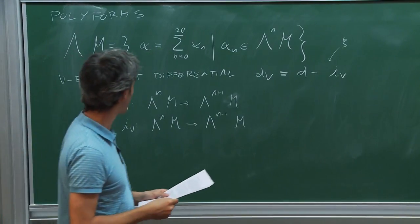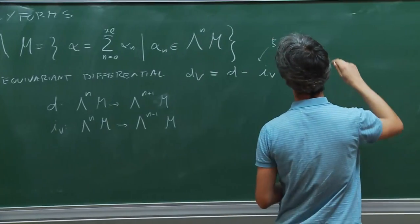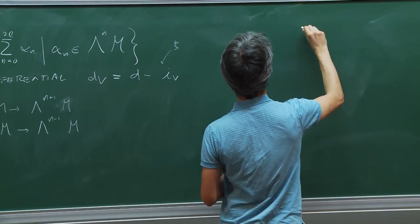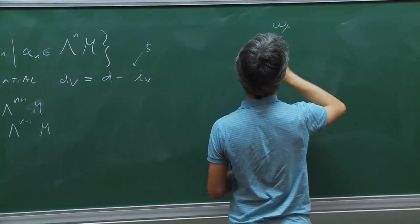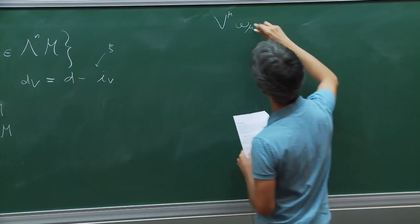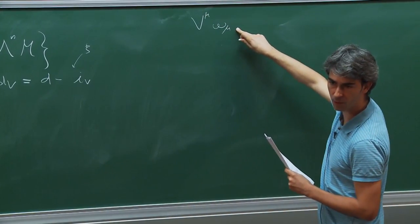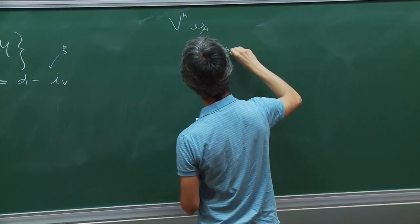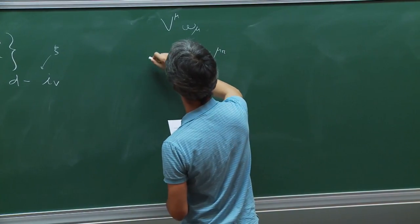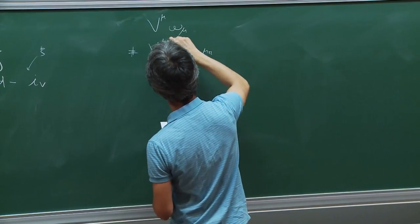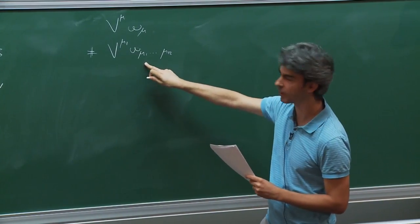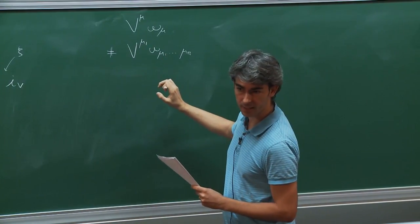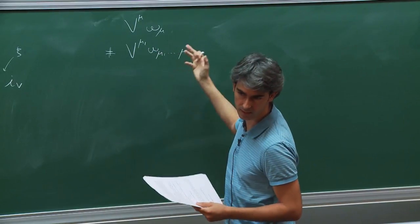A question was raised: the contraction is just contracting the vector field with the form in components. If it's a one-form you contract the vector field with the form; for more indices you contract all indices with the vector field. The operation does not require the metric because the vector field already has indices up and the form has indices down. It is an anti-symmetric object up to a minus sign, depending on the index position convention.